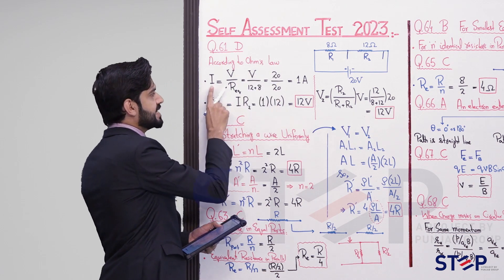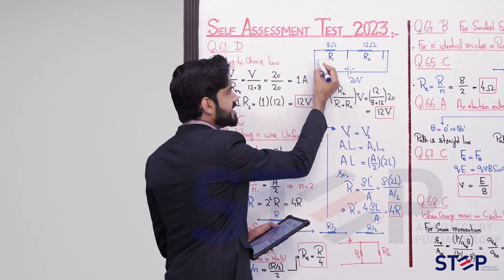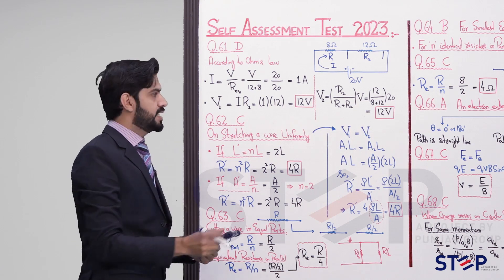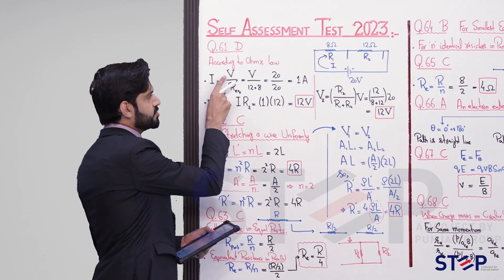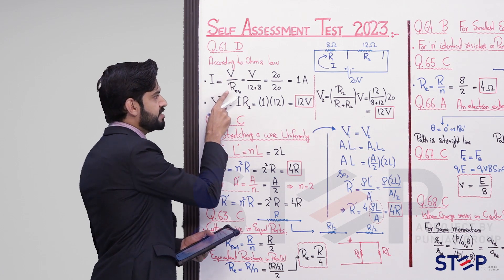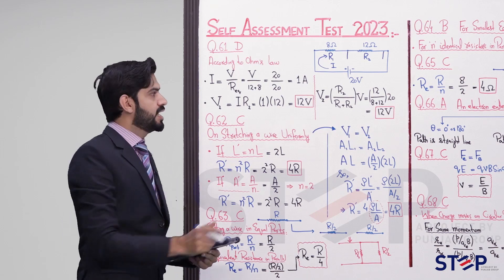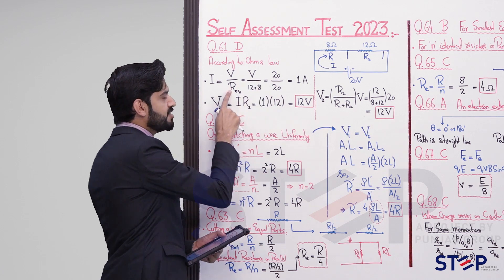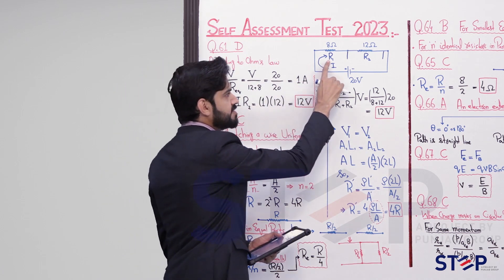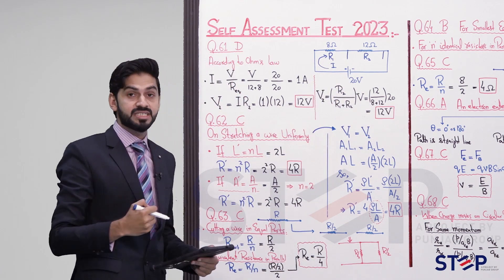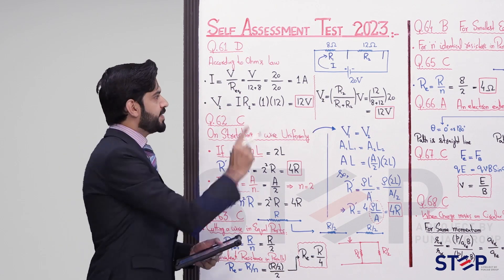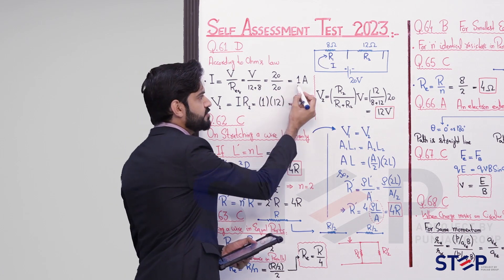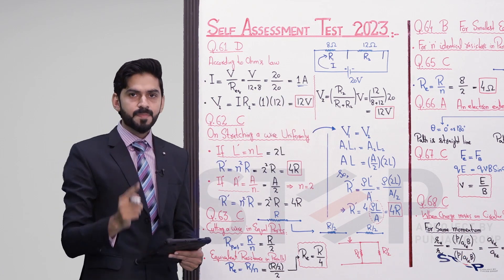First, according to Ohm's law, the current of the circuit — in a series circuit, all components carry the same current. That series circuit current equals the total potential difference divided by the equivalent resistance. Here, total potential is 20 volts, and equivalent resistance is 12 + 8 = 20 ohms. So current = 20/20 = 1 ampere.